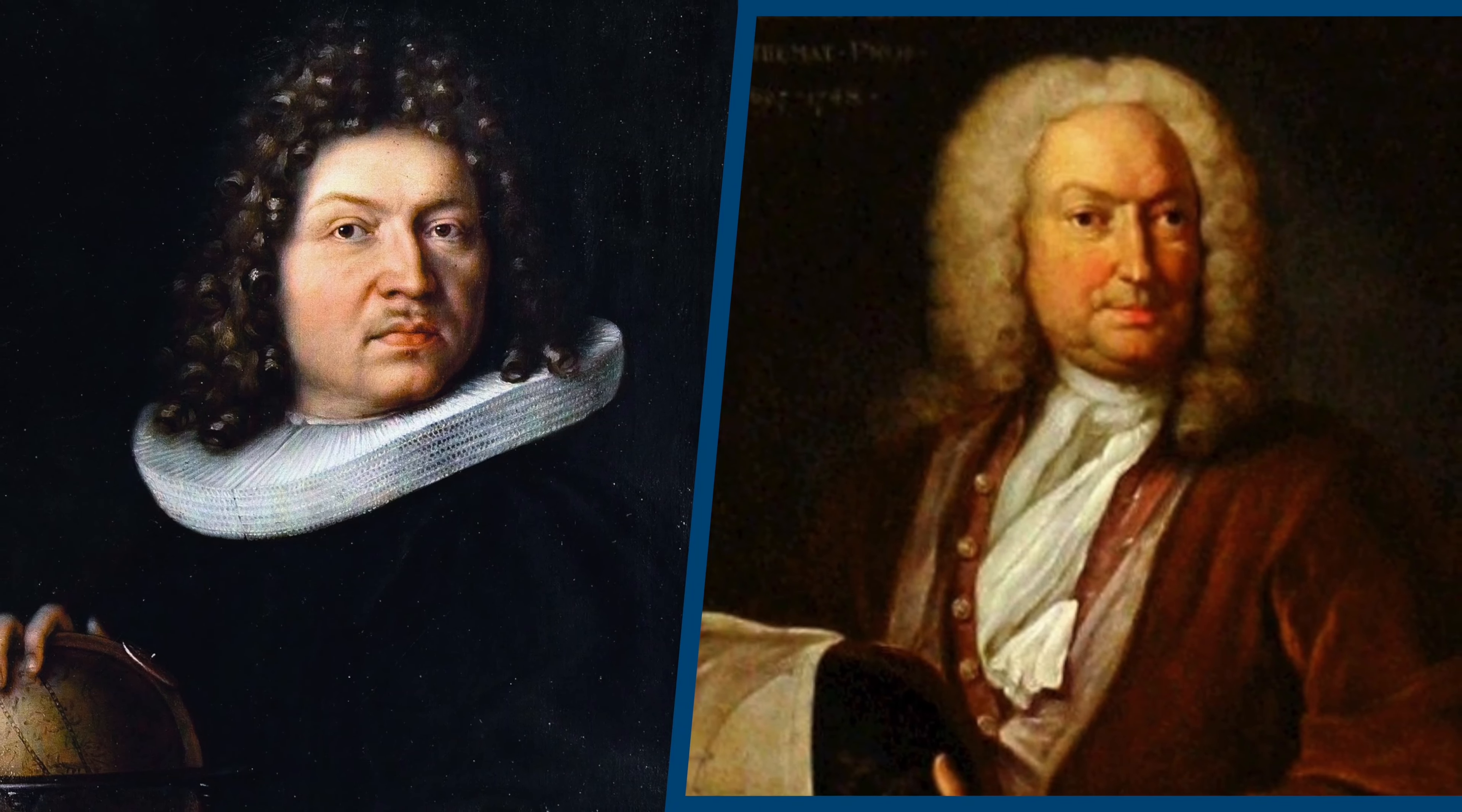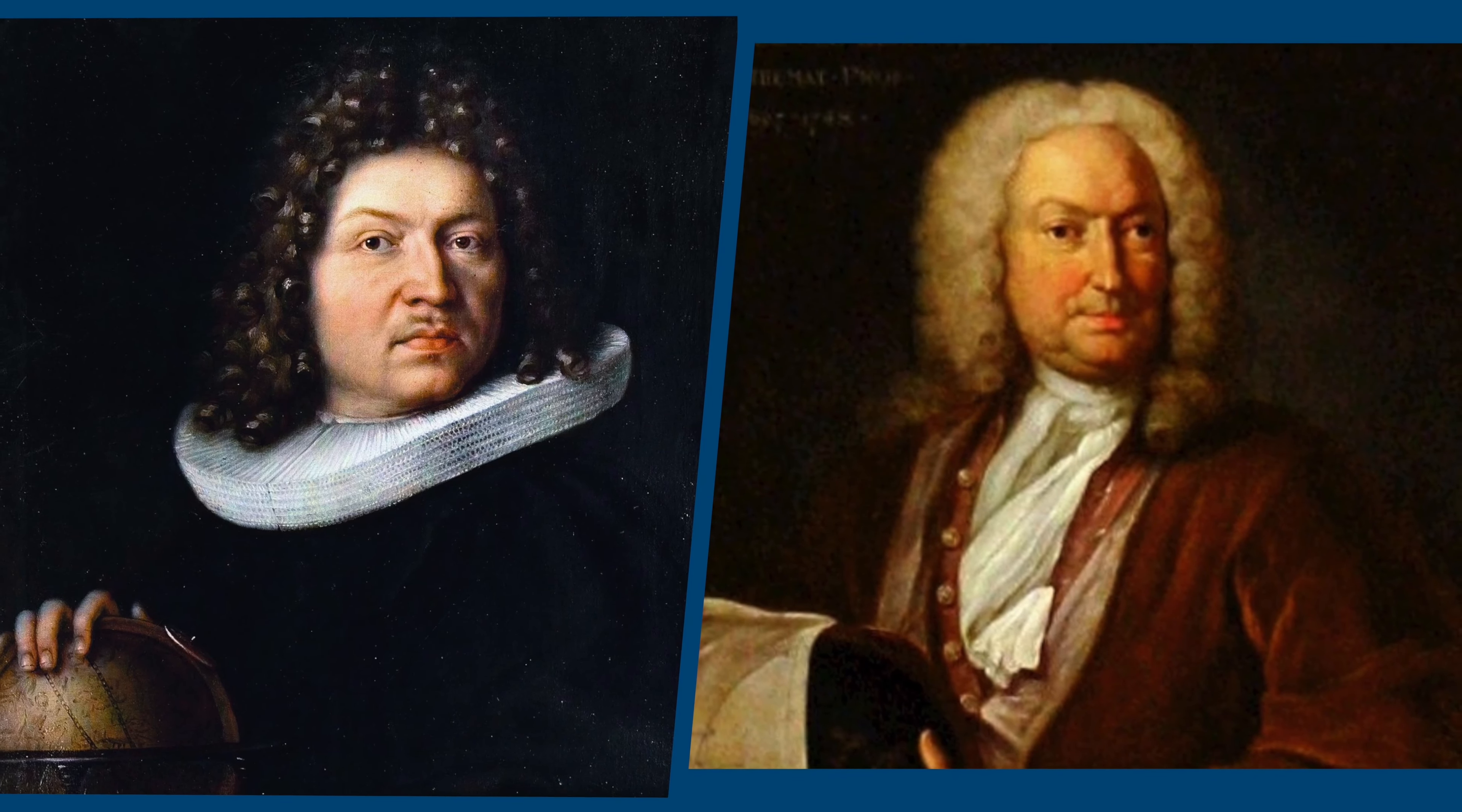However, around this time, things started to get very competitive between them. Johann was jealous of Jacob's success and position, and the two brothers always tried to outdo each other. And finally, the argument over the problem led to the complete breakdown of their relationship.